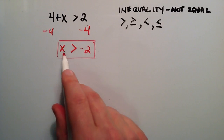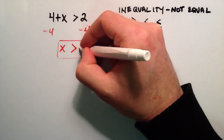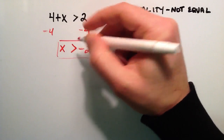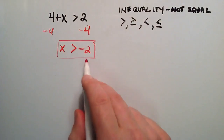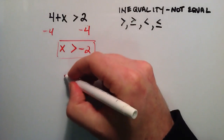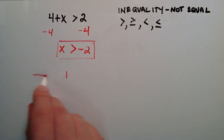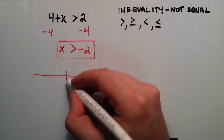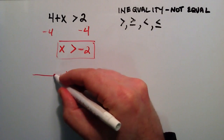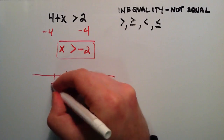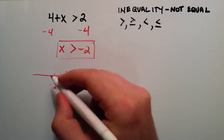So what exactly does this mean — x greater than negative 2? Well, this is a set. And if we were to look at this on a number line, let's say that's the value 0, and we go negative 1, negative 2 — so we'll just call that point negative 2.